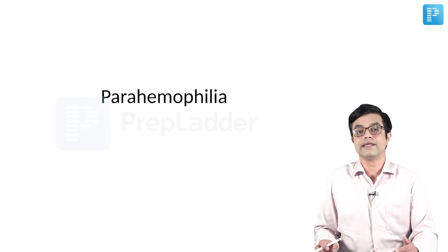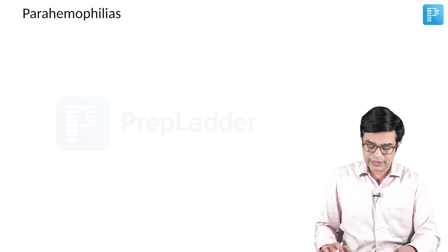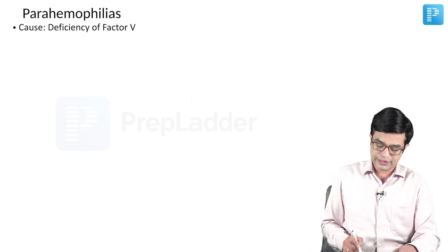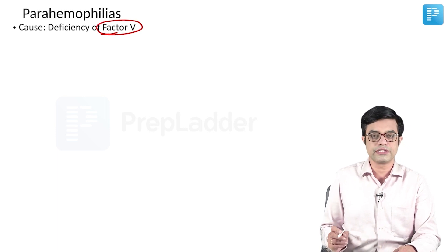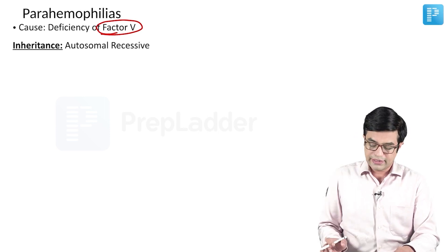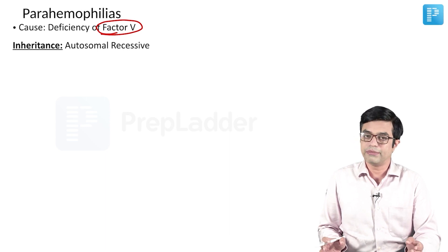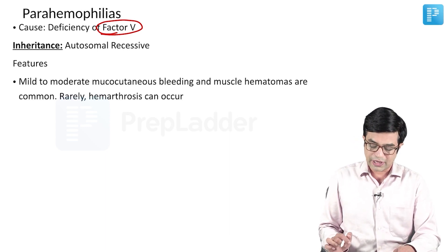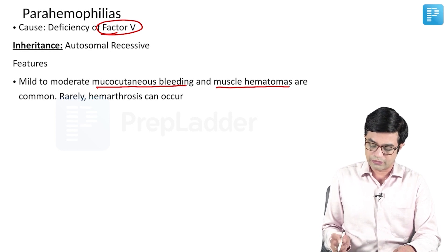A few words regarding parahemophilia. Parahemophilia is due to deficiency of factor V — factor V deficiency produces parahemophilia. Inheritance is autosomal recessive, so this can occur in males as well as females. Features include mild to moderate mucocutaneous bleeding and muscle hematomas.